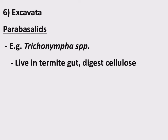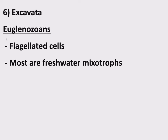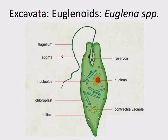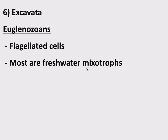Those were both parabasalids. Moving on to more Excavata — the next group is Euglenozoans. They have flagella, and there's a reservoir that functions essentially as a mouth. They use the flagellum, and there's another shorter flagellum in there as well, to reach out and grab prey — bacteria — and bring it into their mouth to eat. So these things are heterotrophs swimming around and eating bacteria. But there's also a chloroplast, so they're also doing photosynthesis. Most Euglenozoans are freshwater mixotrophs — so there's the mixotroph term: they're heterotrophs and autotrophs. Very cool.